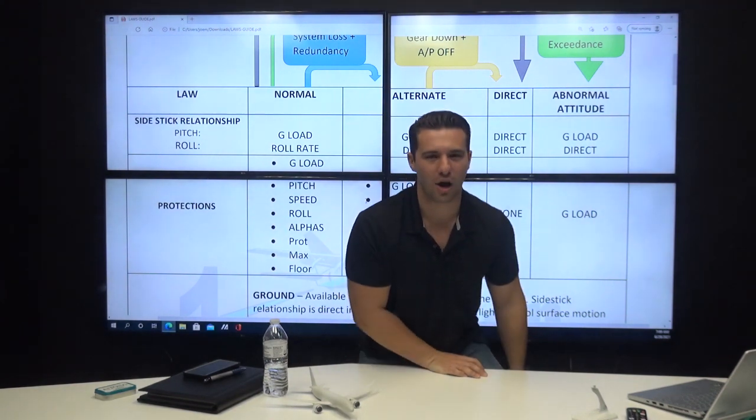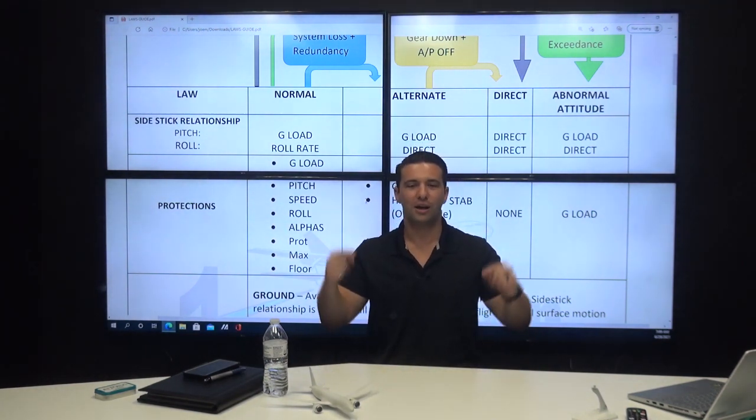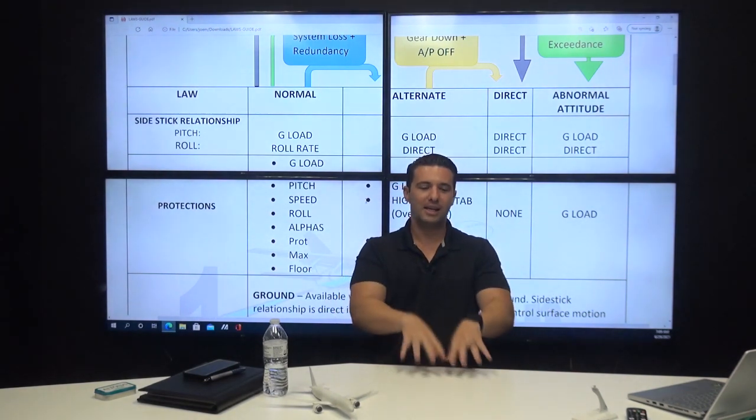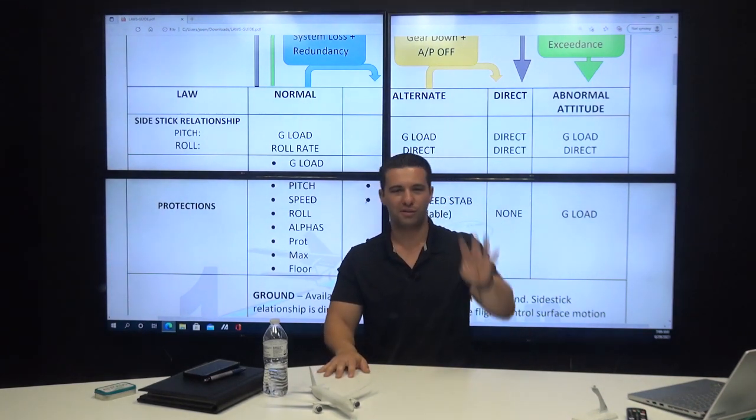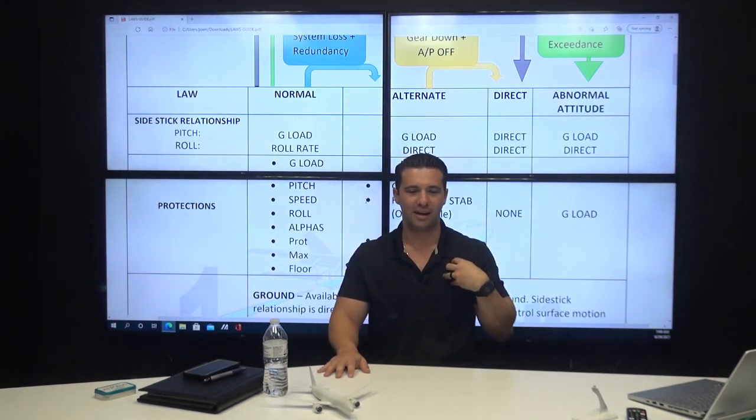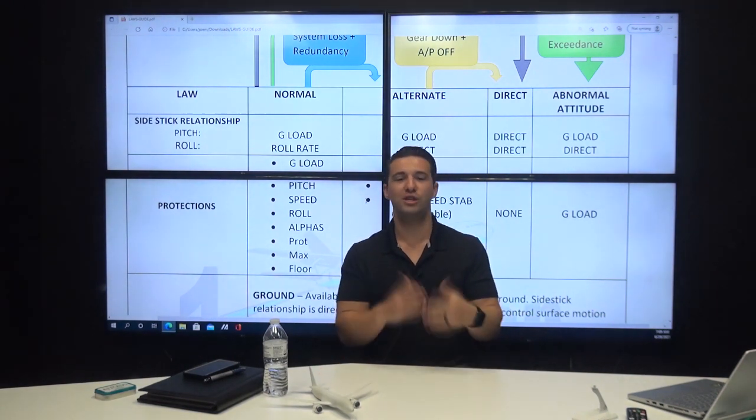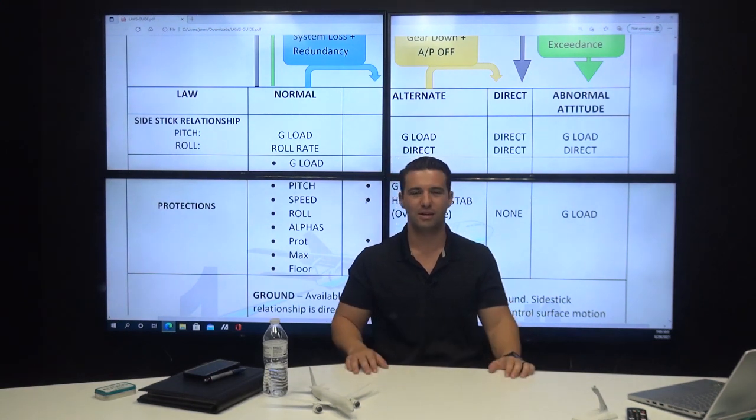And then you're going to get thrust lock because anytime the auto thrust fails, you get thrust lock in the FMA, right? Anytime auto thrust fails, I get thrust lock. When I deselect auto thrust from the FCU, the airplane interprets that as I've had an auto thrust failure and it gives you thrust lock, which is not a big deal. You can clear it by just moving the thrust levers, but it's not technically the proper way of doing it.